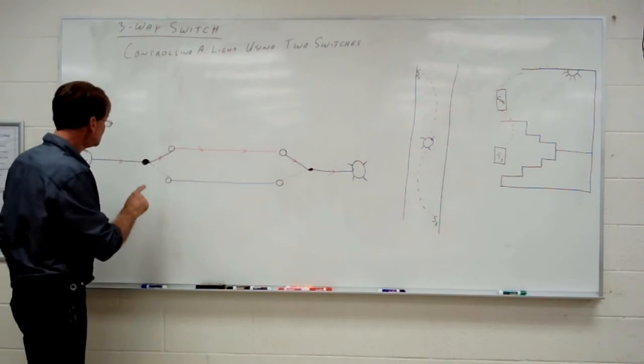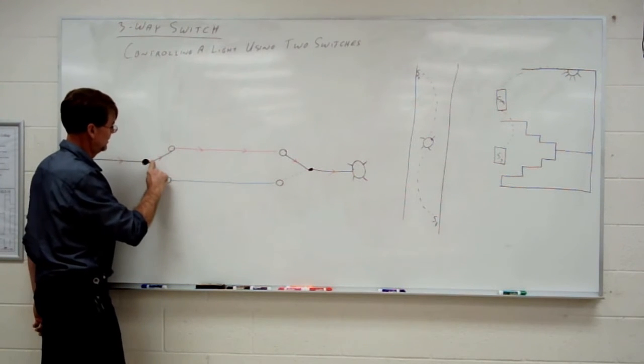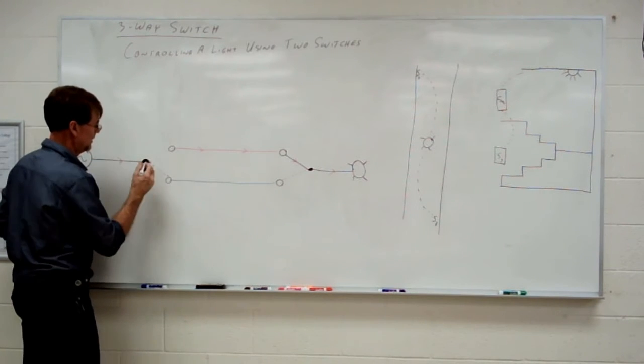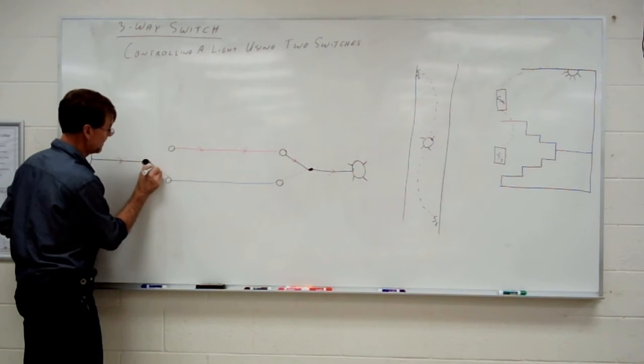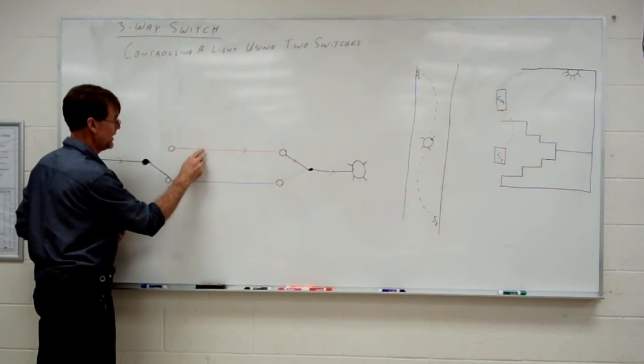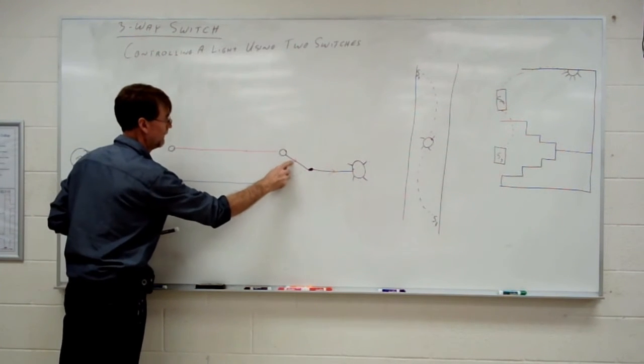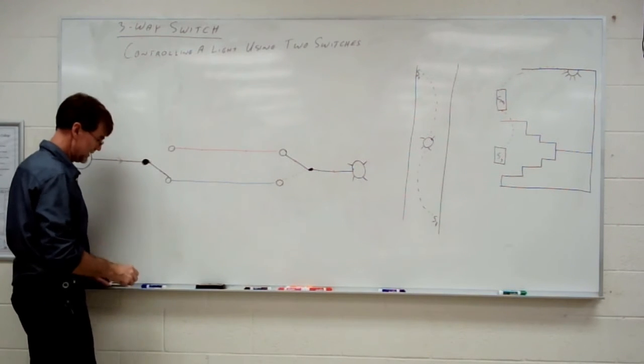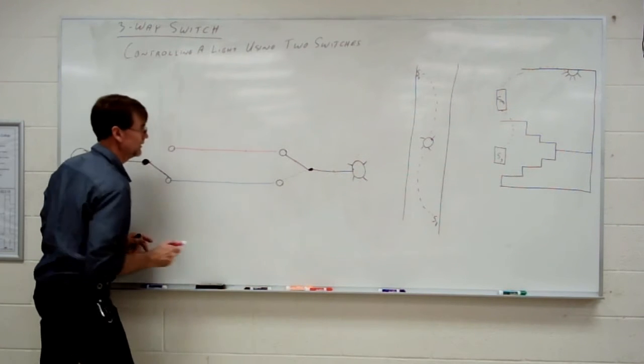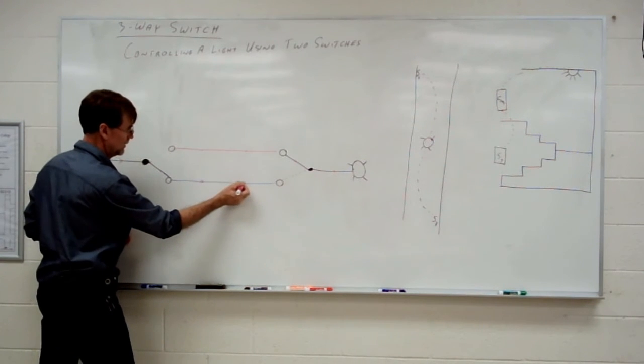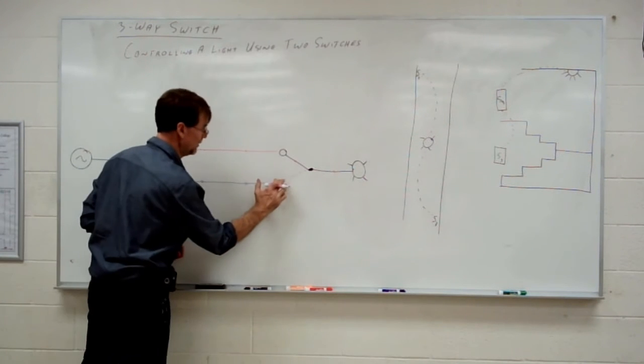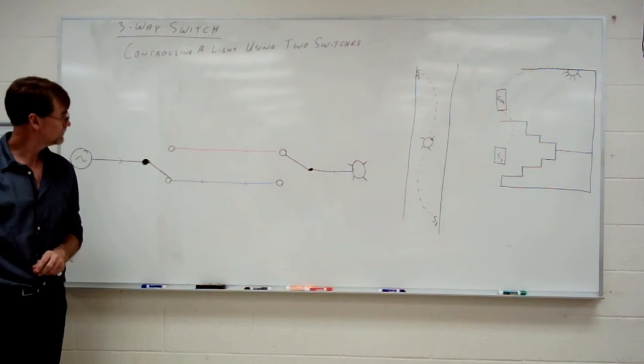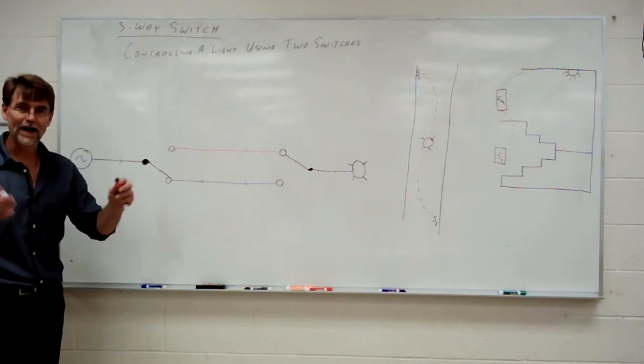Now, if we toggle this switch. So that contact now opens and this one closes. This current goes away. The light turns off. Because the current is now traveling down the other traveler. Except there's no current traveling at all because it finds nowhere to go when it gets to there. So now that's why the light is off.